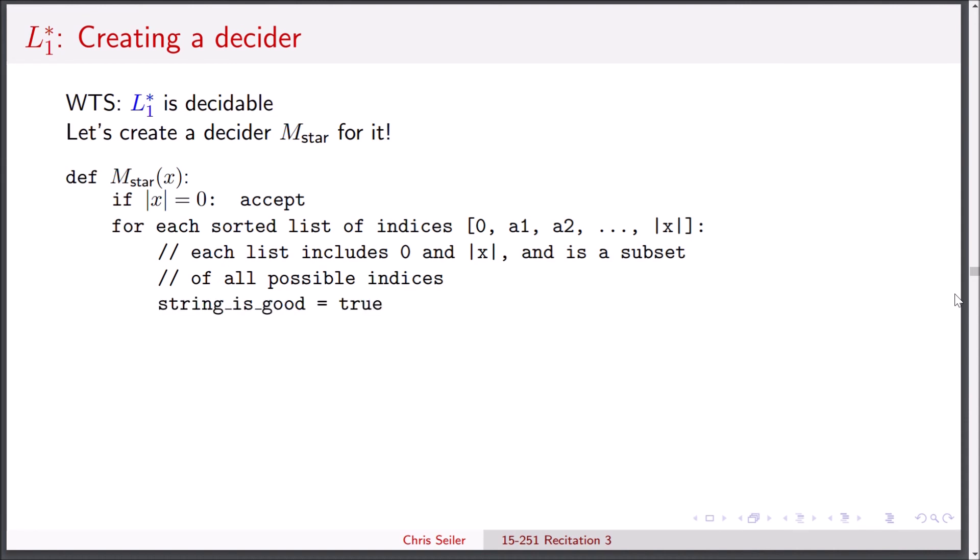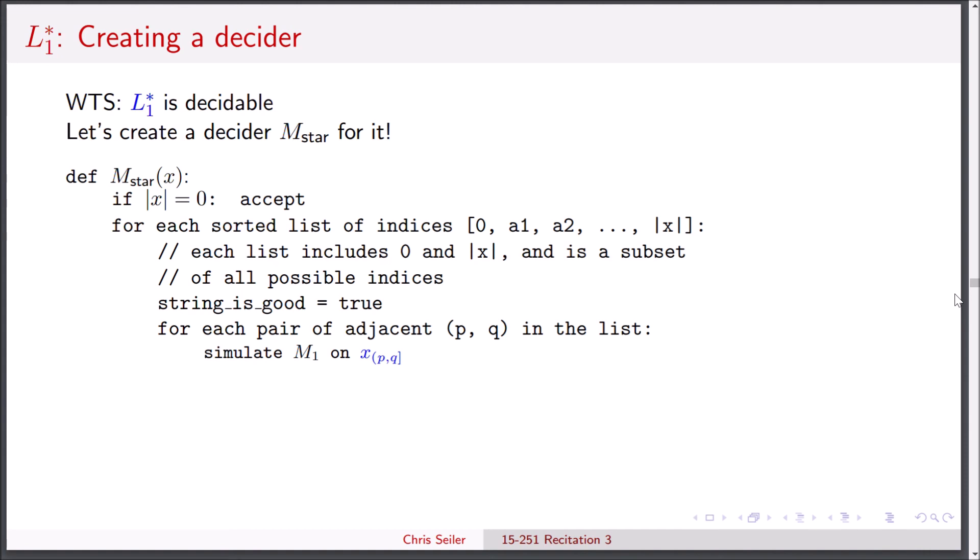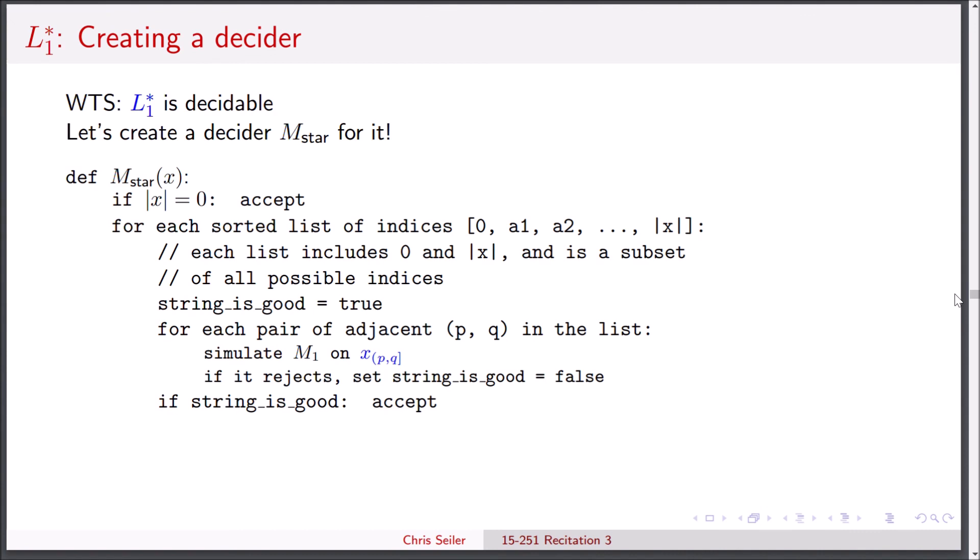We're going to start by setting this string is good flag equals true. The reason we're doing this is because we want to check that all of the substrings are in L1. So if any of them are not in L1, we need to set string is good to false outside of this loop that we're about to do. This loop is essentially going to look at every substring that we've assigned called p and q being adjacent indices in this list. All we need to do is simulate M1 on this substring. If it rejects, we can set string is good equals false. And if string is good on the outside, then all of the M1s must have accepted so we can accept. And otherwise, if all else fails, we will reject.